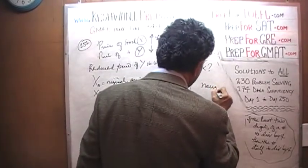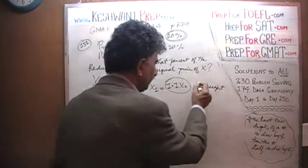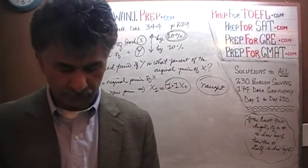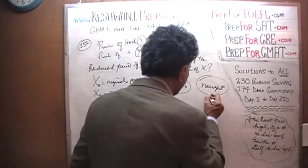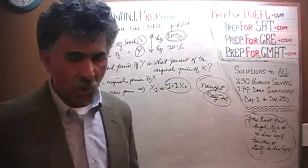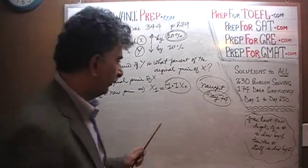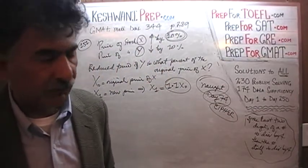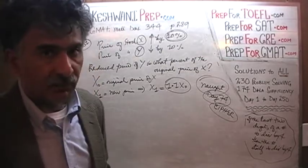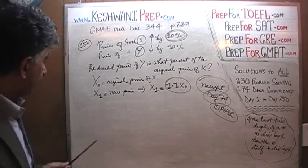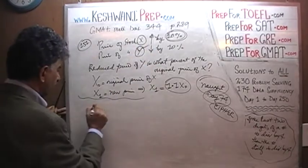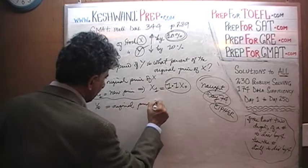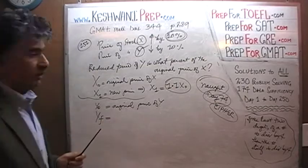By the way, the word 'naught' is spelled N-A-U-G-H-T — we covered this in our vocabulary lesson on day number 74, along with the word 'cipher.' That was a quick digression. Back to our work: the original price of Y is Y-naught, and the final price of Y — which has gone down by ten percent — is 0.9 times Y-naught.